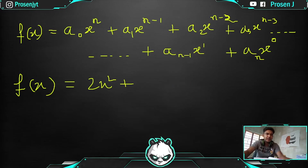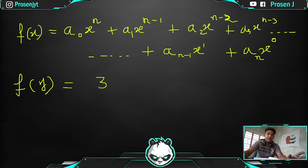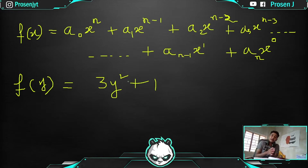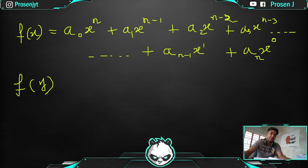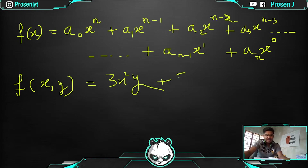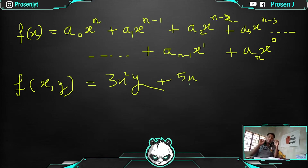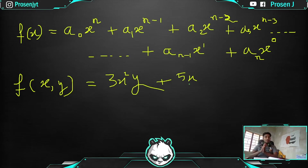If instead we had f(y), then the equation would be in terms of y — the equation would contain only y. And if we had f(x, y), that means both x and y are in the equation — for example, 3x²y + 5x. Here both x and y are present, so changing only x's value won't be enough; you need to change both x and y for the equation's value to change.